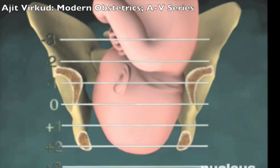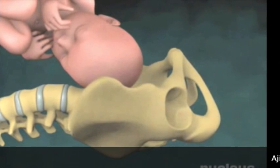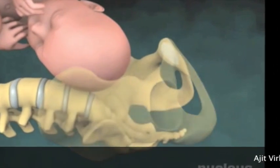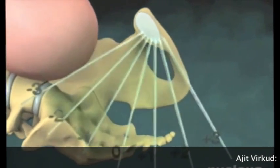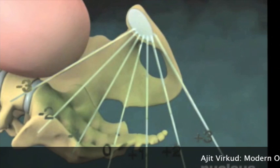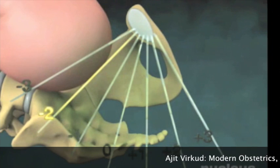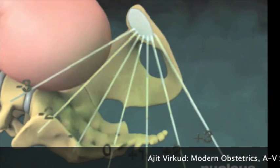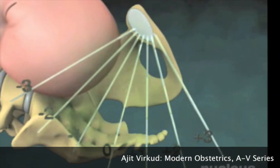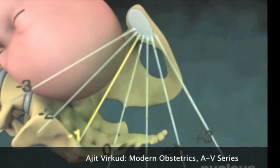One must remember that vaginal assessment of descent by the station concept is not equivalent to the suprapubic descent by the rule of fifths. Vaginal examination is dependent on the type of pelvis and it can also be obscured by the presence of a large caput. When plotting a WHO partograph, the descent of the head is assessed by the rule of fifths and not by the station as estimated by vaginal examination.